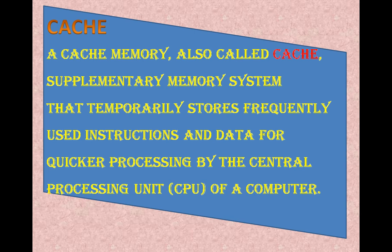A cache memory, also called cache, is a supplementary memory system that temporarily stores frequently used instructions and data for quicker processing by the central processing unit of a computer. It is a very high-speed semiconductor memory that provides speed to the CPU.